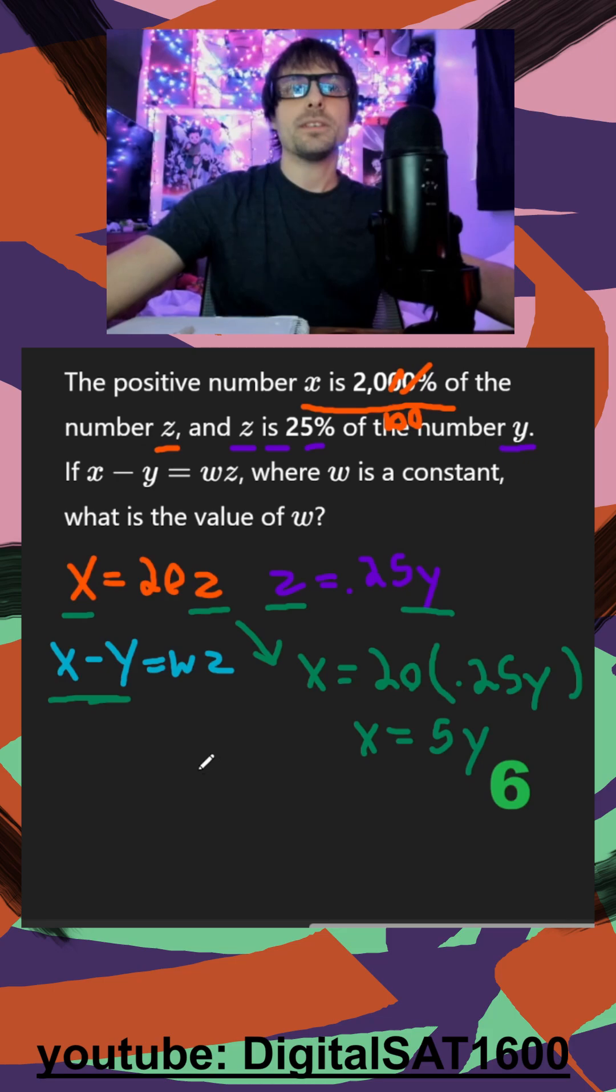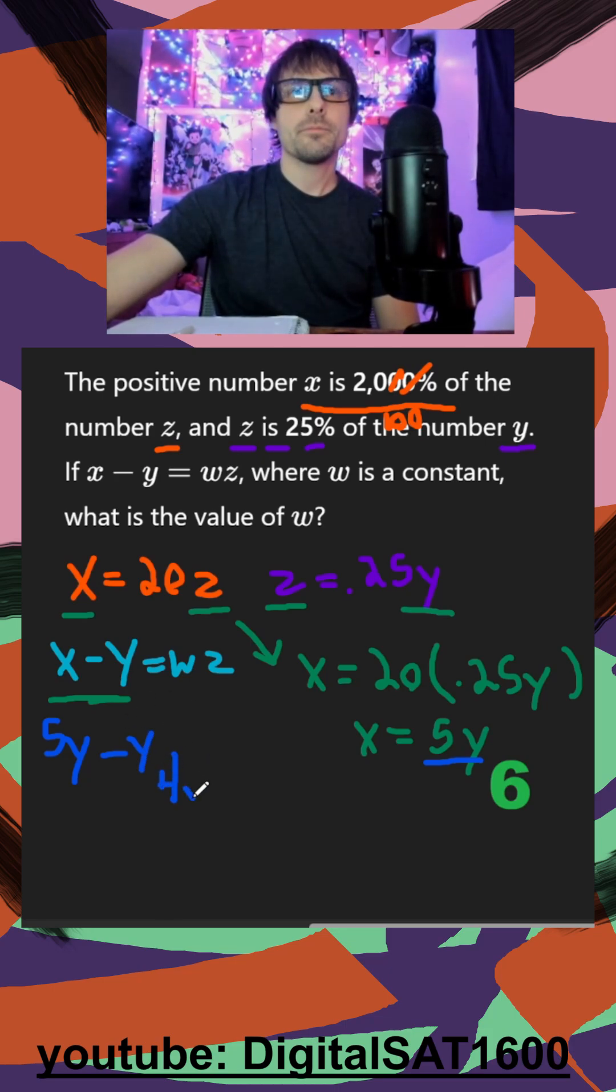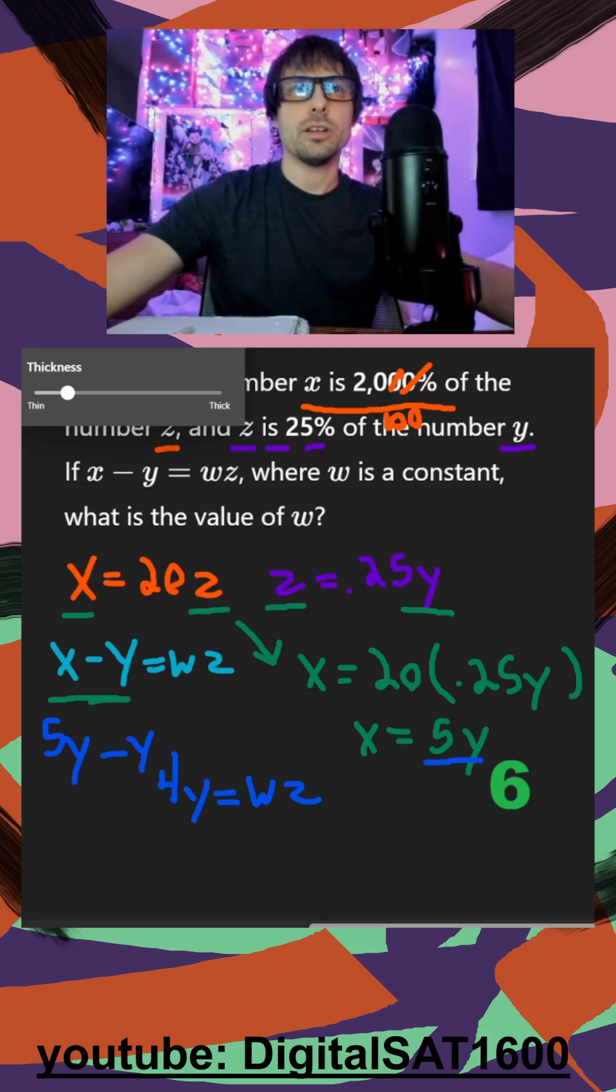That's going to really help us because over to the left, I can say, since x is the same thing as 5y, I can say 5y minus y, or 4y, is going to now equal wz. So we've gotten rid of one of our letters, but we still have one more to get rid of.